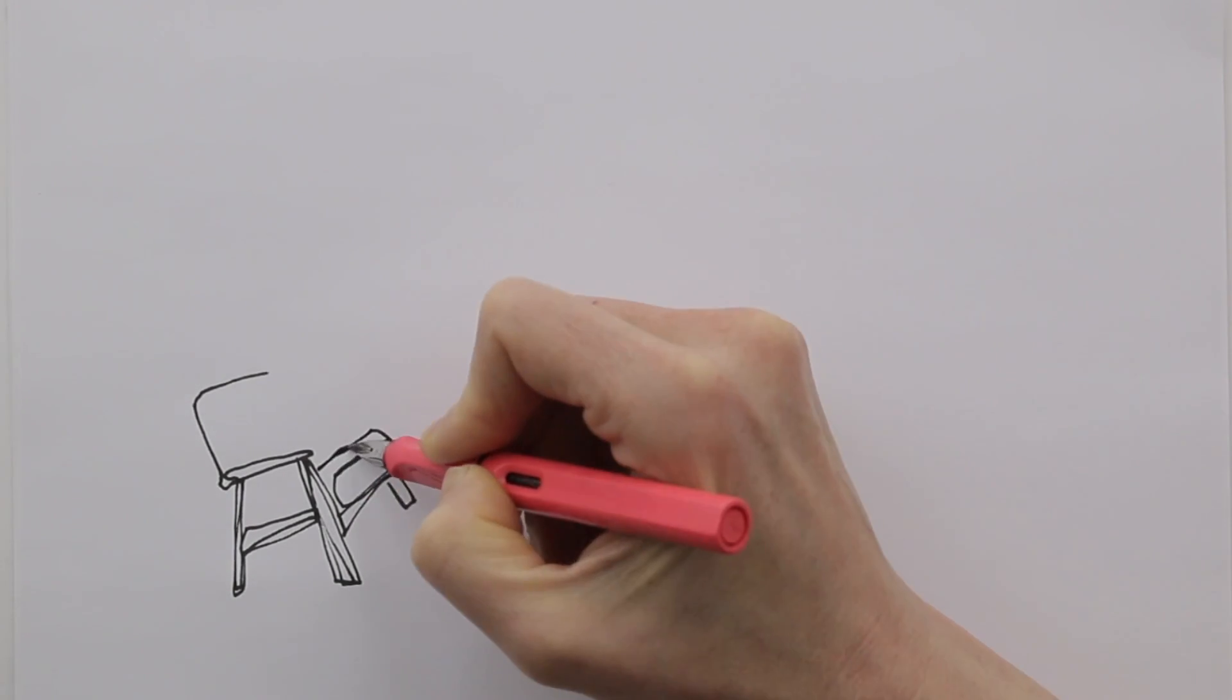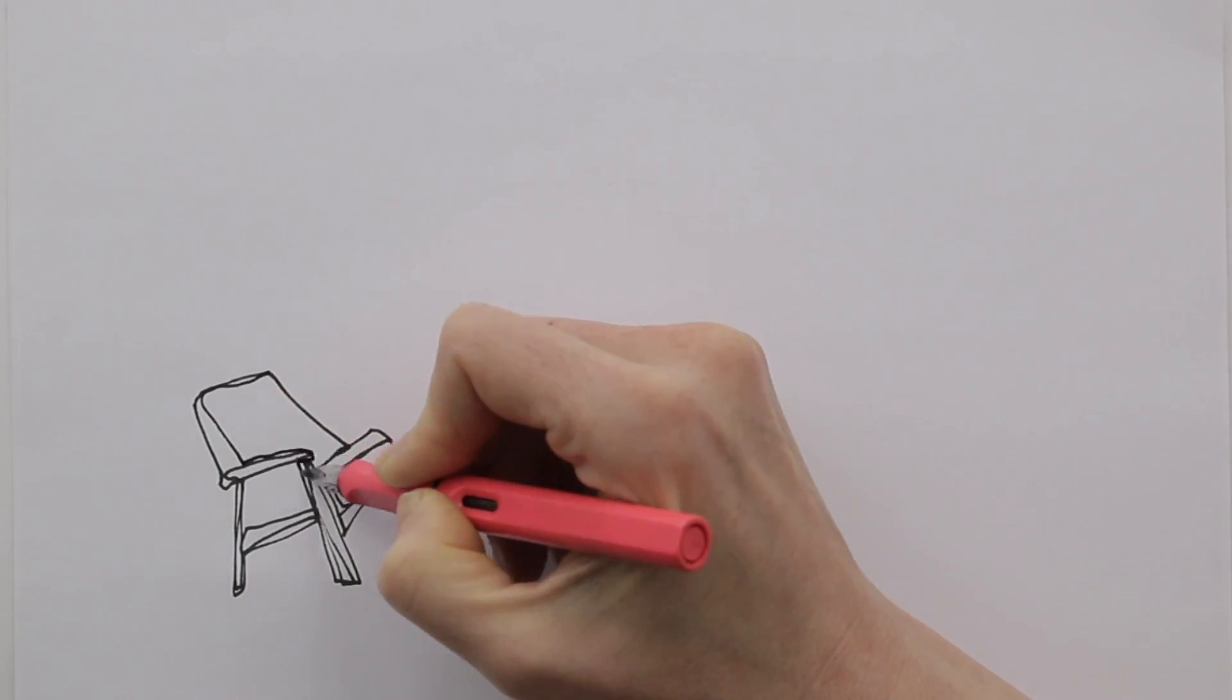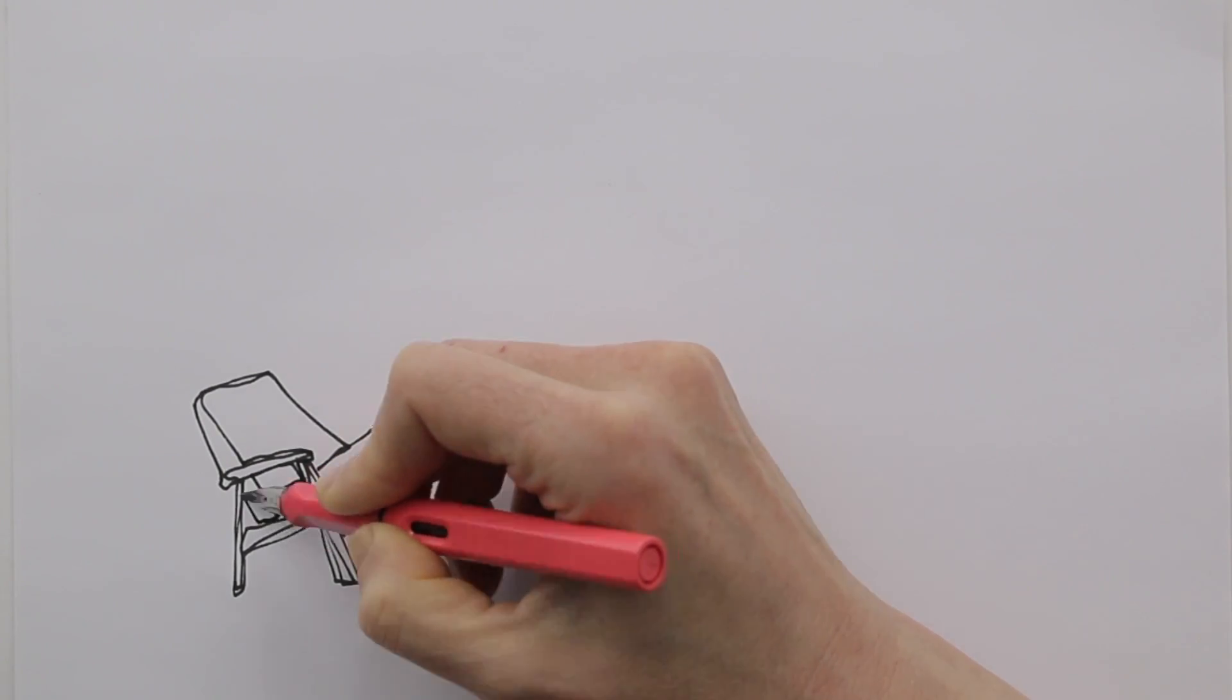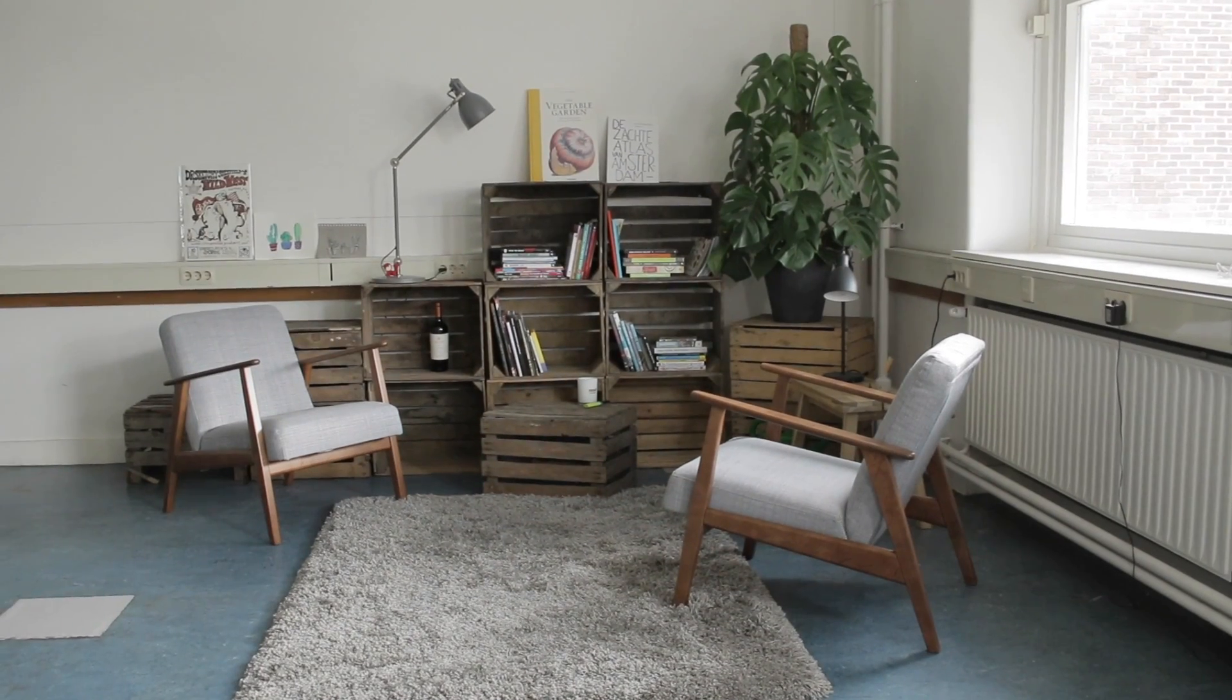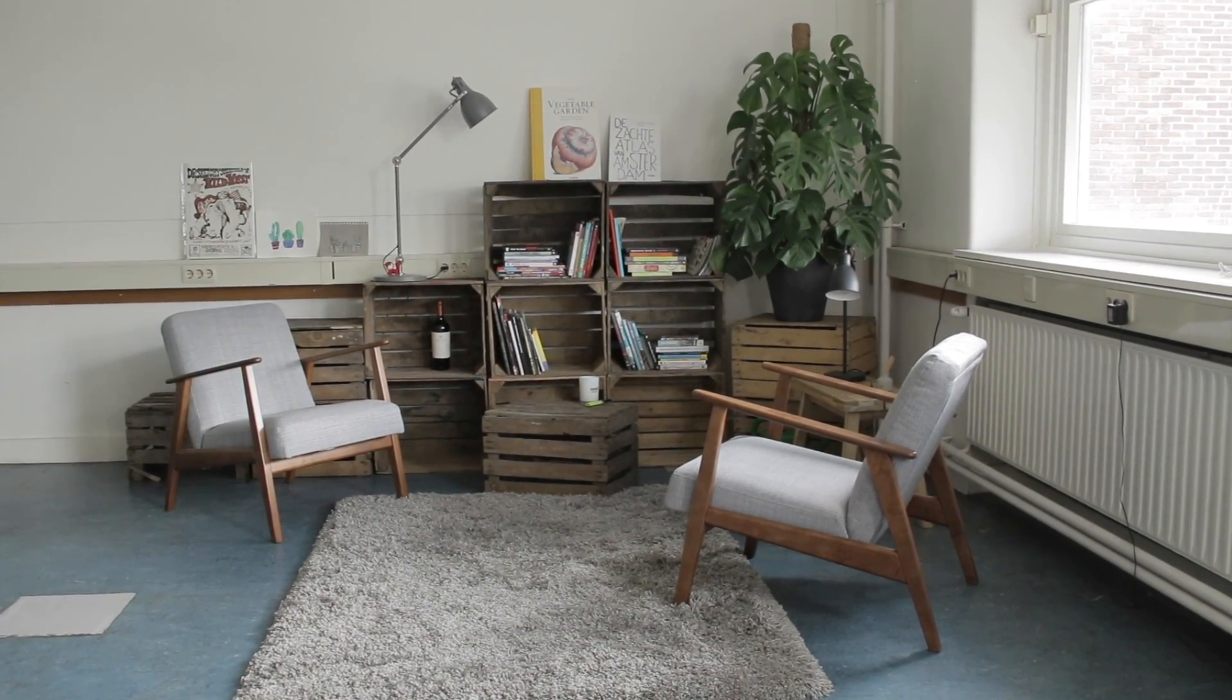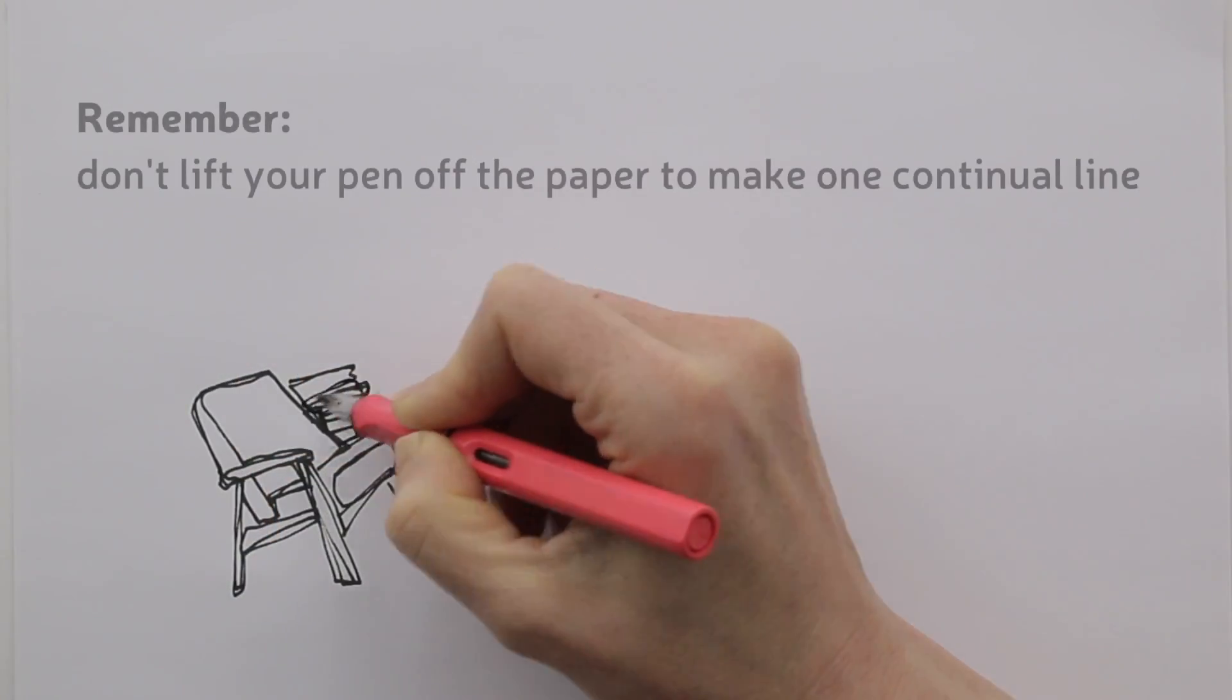And then follow the outlines of the shapes that you see. I've speeded up the video, so I can keep this video fairly short. It looks super fast, but trust me, you need to slow down. Slowly, with your eyes, follow the outlines of the shapes. And let your pen follow to record it.